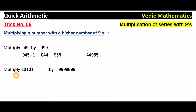Coming to the second problem: multiply 10,101 by 9,999,999. Just observe — 1, 2, 3, 4, 5: there are 5 digits in the given number. Coming to the nines, there are 7 digits, so this is multiplying a number with a higher number of nines. 7 nines are there.